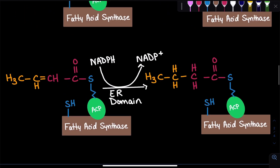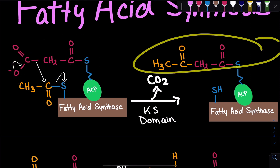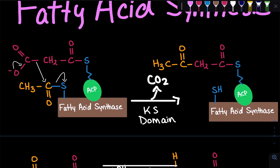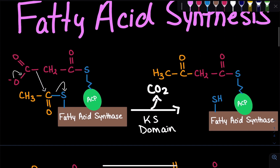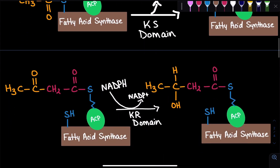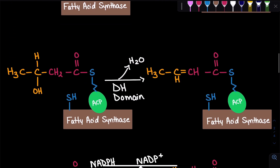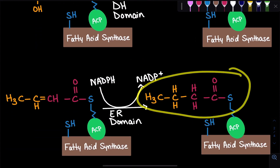To go over again: we have multiple domains, each with a different enzymatic activity. At the KS domain, we combined acetyl with malonyl and formed ketoacyl ACP. Then ACP swings to the KR domain and we reduce it with NADPH — because when we form the carbon-carbon bond, we have a double-bound oxygen we need to remove. We swing to the DH domain and dehydrate it. We swing to the ER domain and reduce it again. And we've got our fatty acyl ACP.